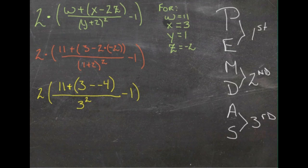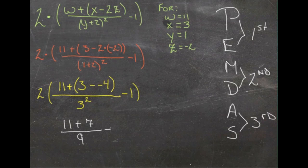Next step, we're going to go ahead and do our 3 minus negative 4 inside the parentheses. So we have 11 plus, subtracting a negative is the same as adding, so we have 11 plus 7, over 3 squared, that's 9, minus 1. And we still have our 2 outside the parentheses.